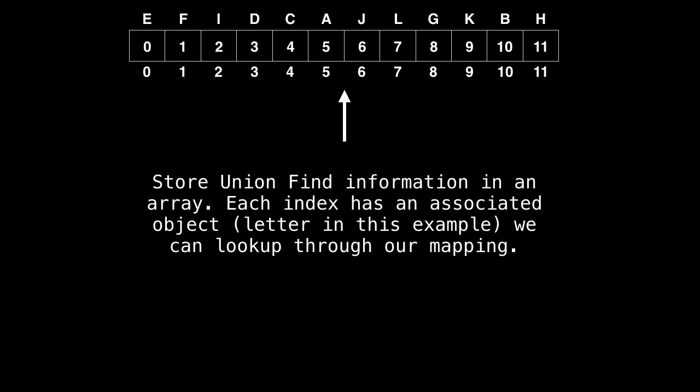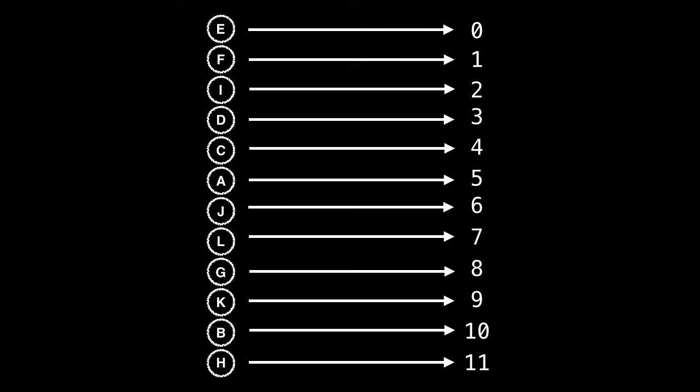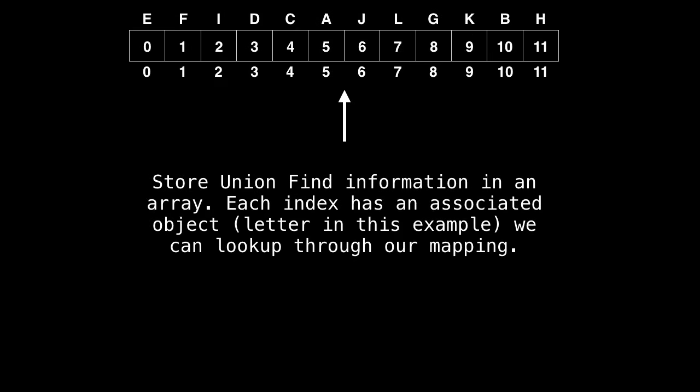Next, we're going to construct an array. Each index is going to have an associated object and this is possible through our mapping. So for instance, in the last slide, a was mapped to five. So slot five or index five is going to be a slot.